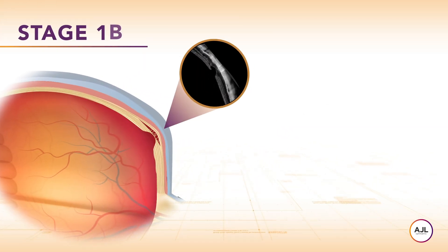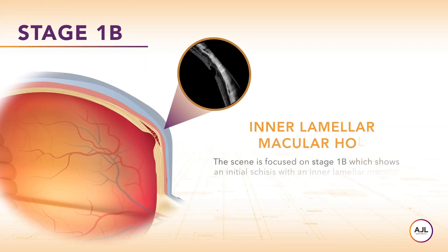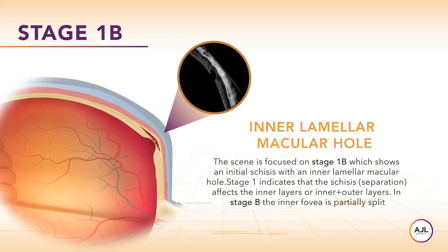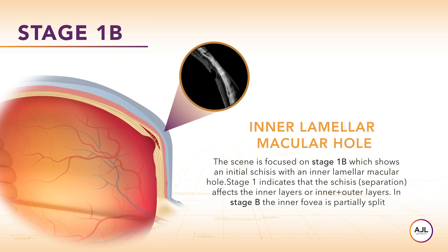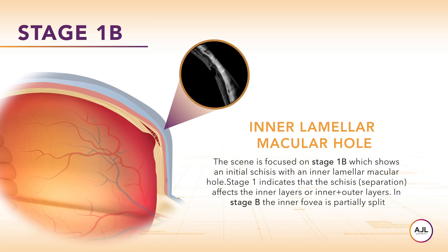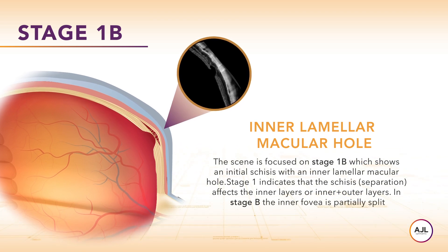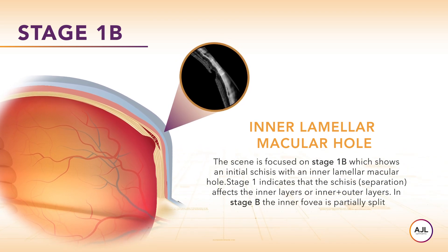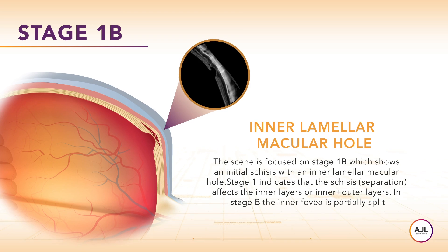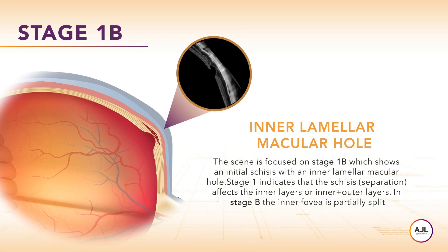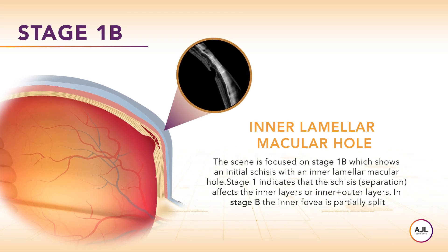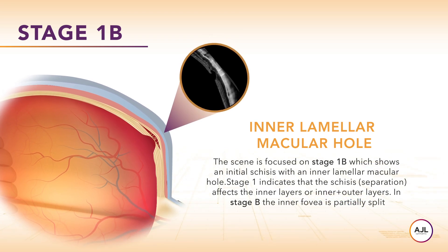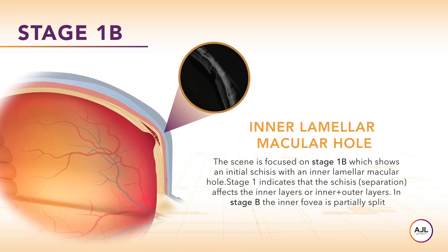Stage 1b shows initial schisis with an inner lamellar macular hole. Stage 1 indicates that the schisis affects the inner layers, or inner and outer layers. In stage B, the inner fovea is partially split.